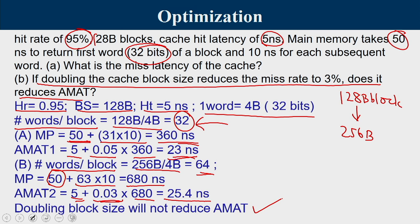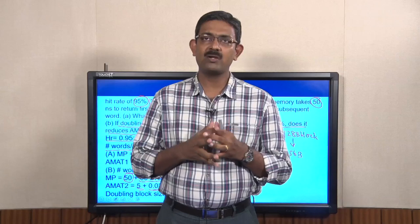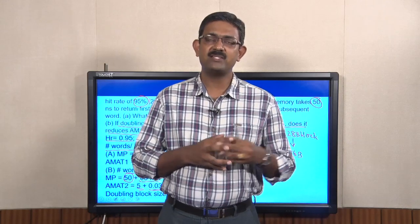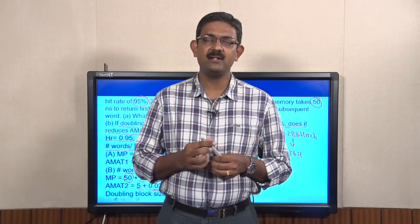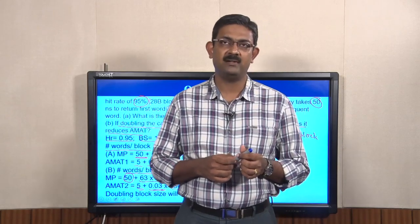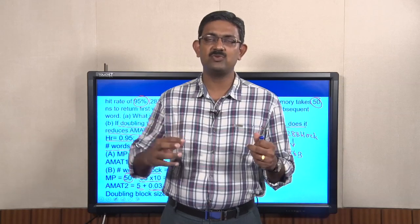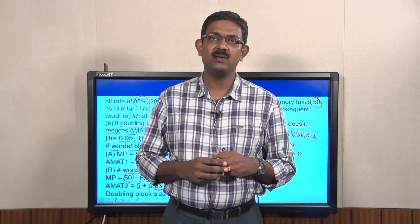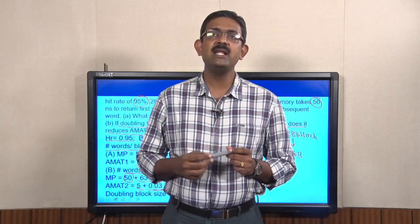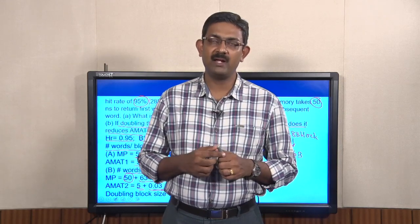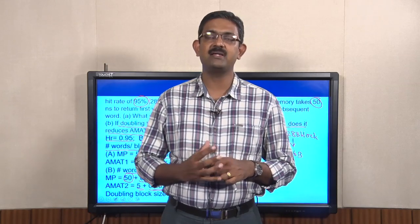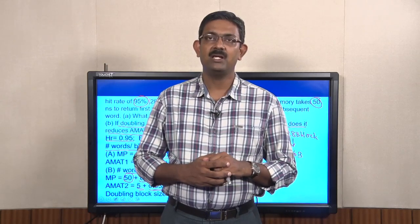This is a classical example where increasing block size reduces compulsory misses — reflected by the miss rate dropping from 5% to 3%. However, bringing larger blocks from the next level of memory increases miss penalty significantly. The increase in miss penalty is more dominant than the reduction in miss rate, so the AMAT of the doubled-block-size version is larger than the original, making this optimization ineffective.